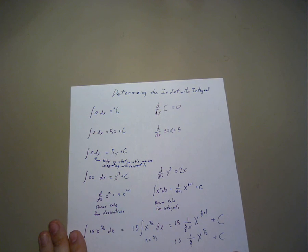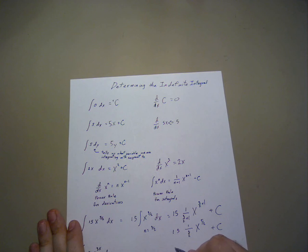If we further simplify this, we get 15 times 2 over 5, x to the 5 over 2 plus c, or simply 6x to the 5 over 2 plus c.